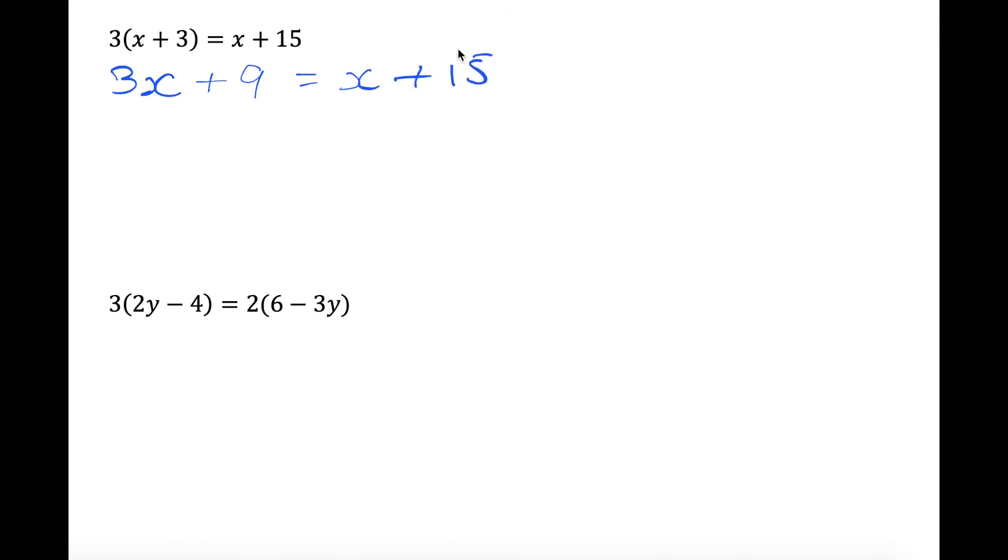Our next step is to get this x over to this side. So we're going to minus x from both sides. So 3x minus x gives 2x plus 9 equals, so this is x minus x is 0, equals 15. So we did minus x on this line.